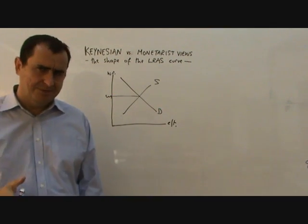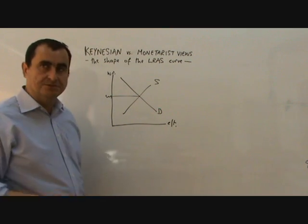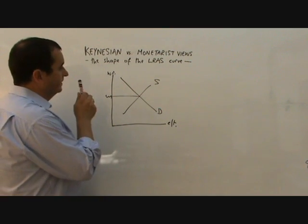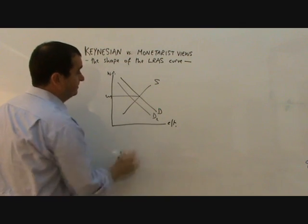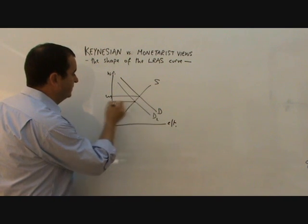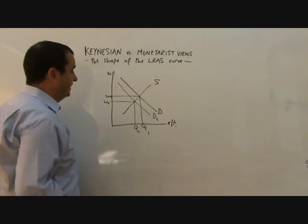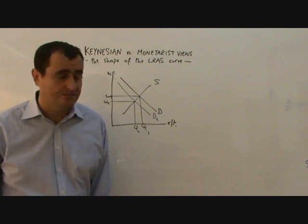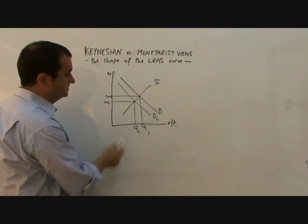But what happens when there is a fall in the demand for labor in a recession? That's where the two groups disagree. Monetarists believe that when there is a fall in the demand for labor, the market will clear just like any market. Market forces will lead to a lower wage, W2, and a lower quantity, Q2. Fewer people will want to supply themselves for work, and that's why there is a fall in the quantity supplied.